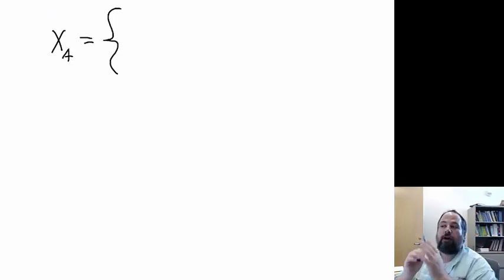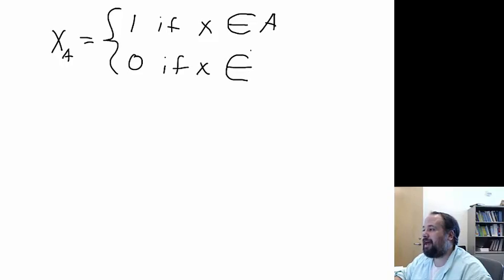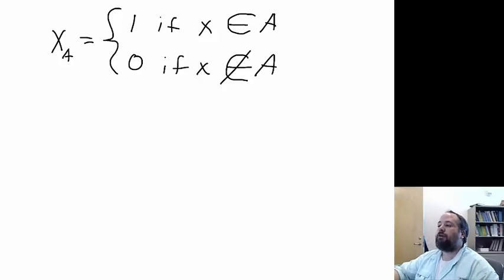So definition two is what we call the characteristic function. The characteristic function is defined as one if some x is a member of set A, and it's defined as zero if x is not a member of set A. That's it. That's the characteristic function. So the domain is set A, and the range is zero or one, which is an important thing to remember about the characteristic function.